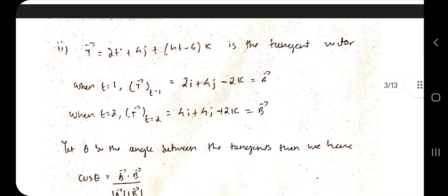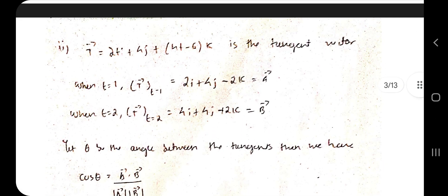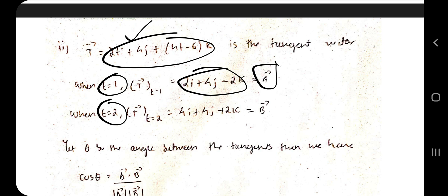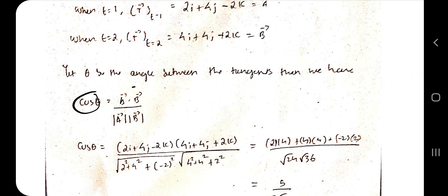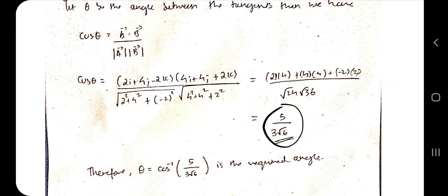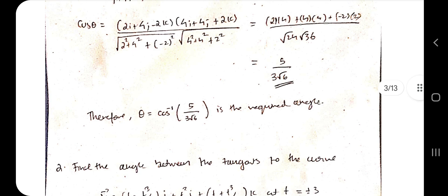The second type of question asks for the angle between two tangent vectors at t = 1 and t = 2. Using the tangent vector formula, substitute t = 1 to get vector a and t = 2 to get vector b. Then find the angle using cos θ = (a · b) / (|a| |b|), and θ = cos⁻¹ of that value.